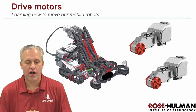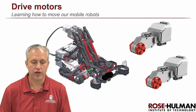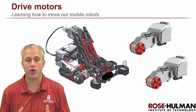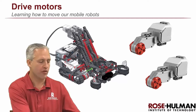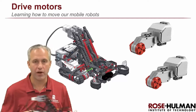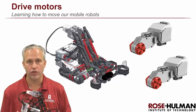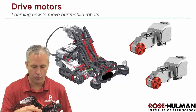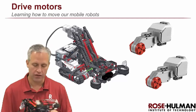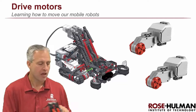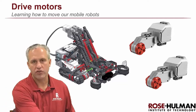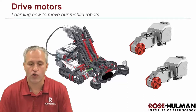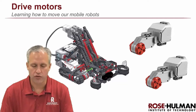Welcome to the Drive Motors unit. In this unit, we're going to teach you all about driving the little robots around. The crawler tracks have a powered wheel in the front, and we're going to learn about using that. It's a great way to start with mobile robots — to drive them around first.